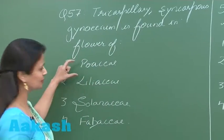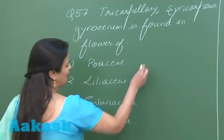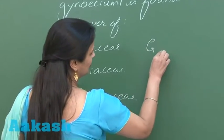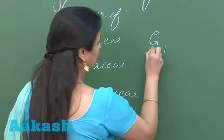So let's see question option number 1. In the Poaceae family, gynoecium is monocarpellary and superior.